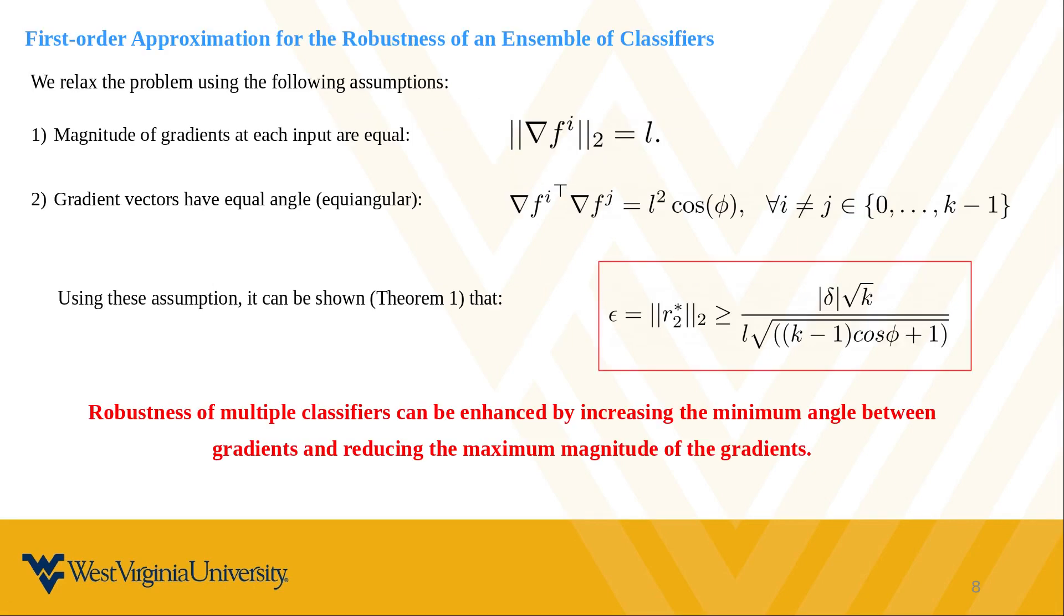We extend the previous studies evaluating the robustness using first-order approximations. We consider two geometric assumptions that allow us to explicitly connect the first-order properties of the gradients to the robustness of the ensemble.